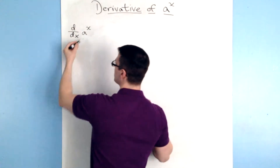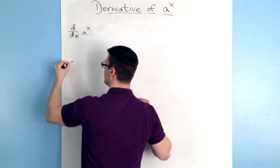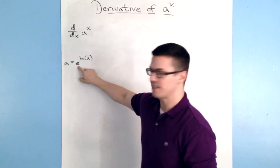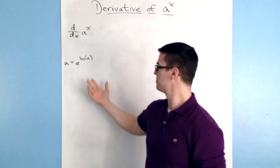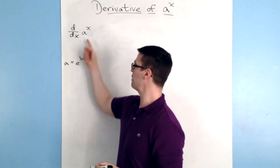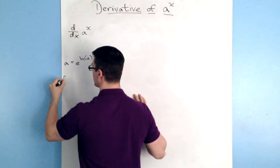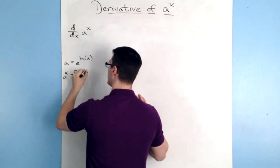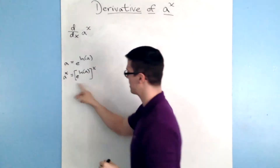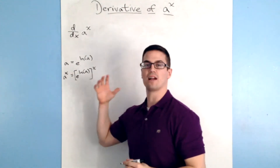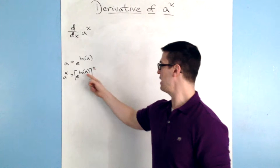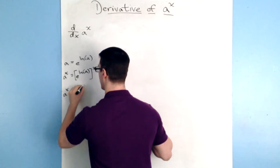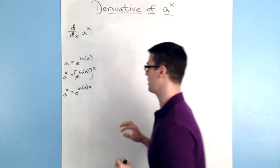The first thing we're going to want to do is write a in terms of e. So I'm going to write a is equal to e to the ln a, because technically speaking, this e and this ln would cancel, and you'd have a equal to a. Now I want a to the x, so I'm going to raise both sides to the x power, and you end up with e to the ln a, to the x power, is equal to a to the x. Based on our exponent properties — a power to a power — you multiply the two powers together, and you end up with a to the x is equal to e to the ln a times x.